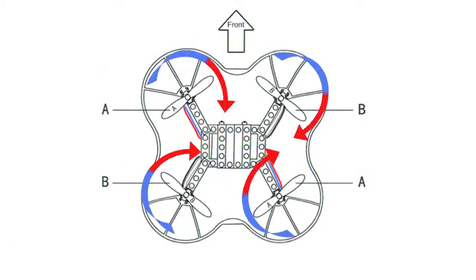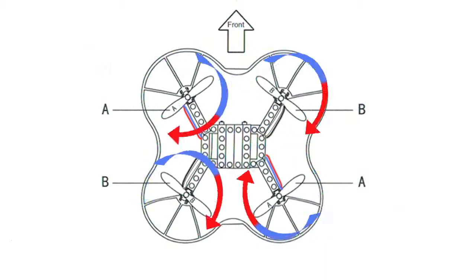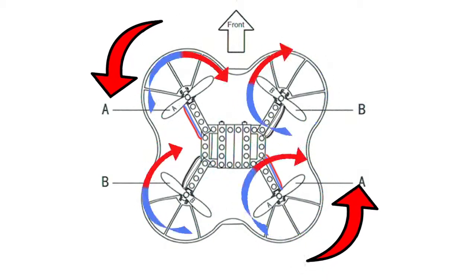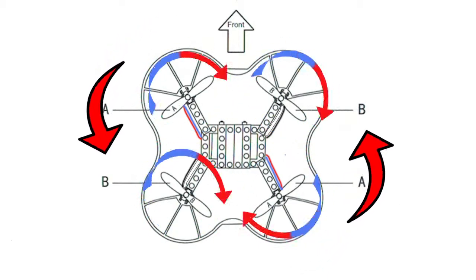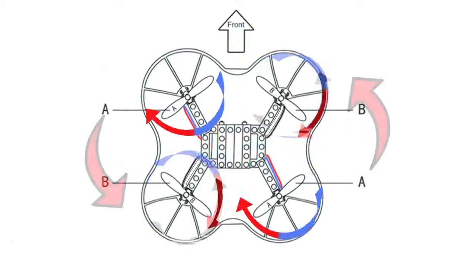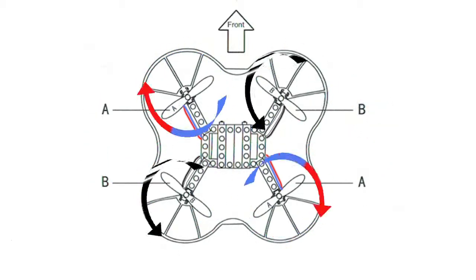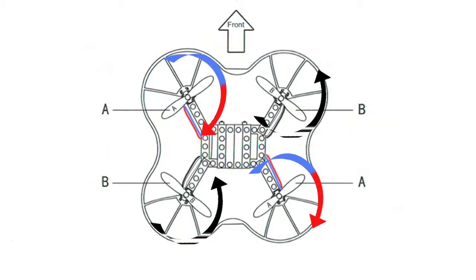So if all motors were spinning in one direction, let's say clockwise, the torque would force the drone to spin anti-clockwise on its central axis. With two motors spinning one way and two the other, that cancels that problem out.